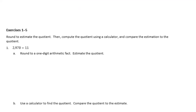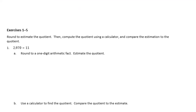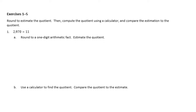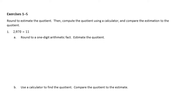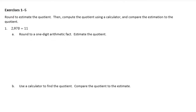Exercises 1 through 5. Round to estimate the quotient, then compute the quotient using a calculator and compare the estimation to the quotient. Problem: 2,970 divided by 11. Round to a one-digit arithmetic fact and estimate the quotient. We're going to start with 2,970 divided by 11 and get it down to a one-digit arithmetic fact by rounding.